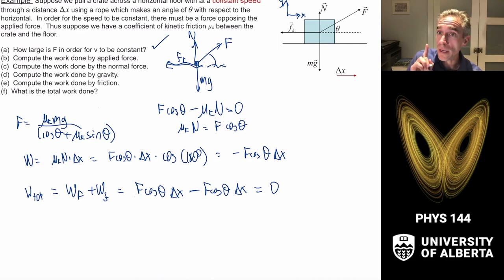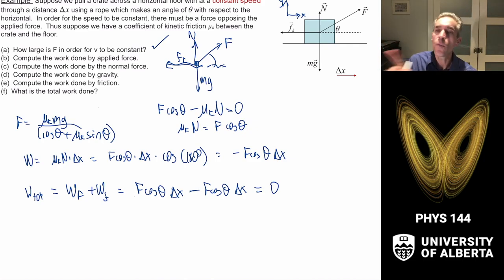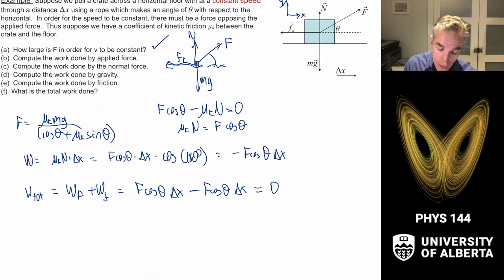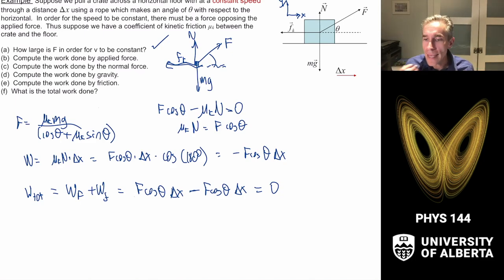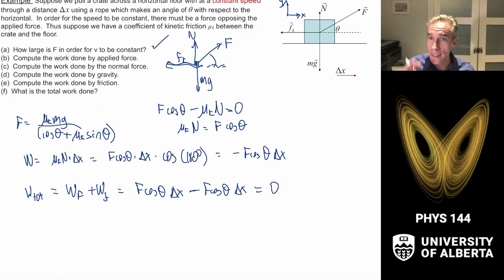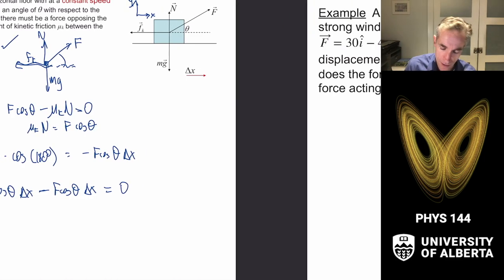This is an important result: you can have many forces acting, but unless they contribute positive net work, the energy will not change. We can extend this to full vector dimensions using the dot product in unit vector form — for example, a loaded shopping cart rolling across a parking lot in wind.